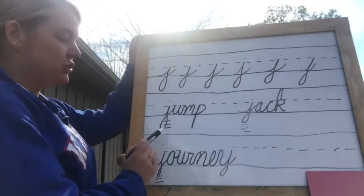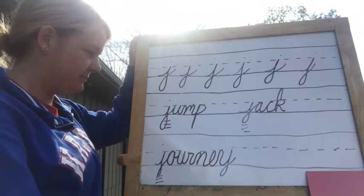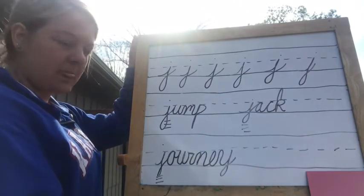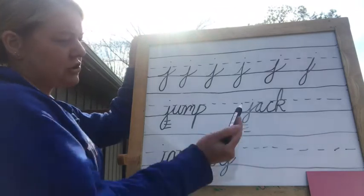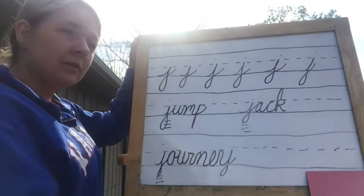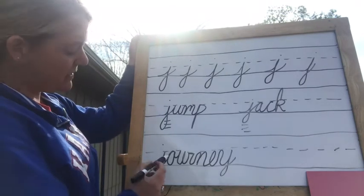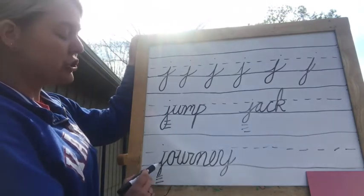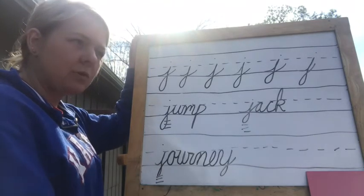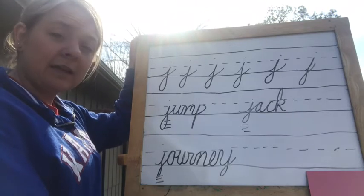So we have jump — can you jump up and down? We have Jack, which can be used as the name Jack, or there is a rabbit called a jackrabbit. And this word is journey. Used in a sentence, it would be: we went on a journey around the lake.